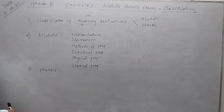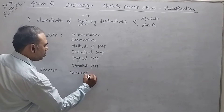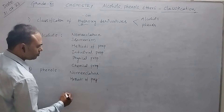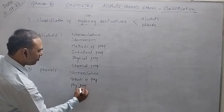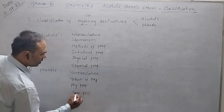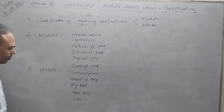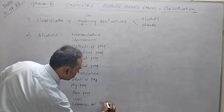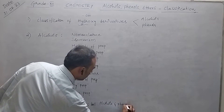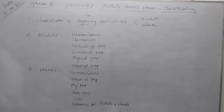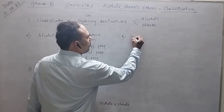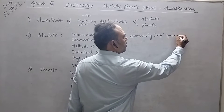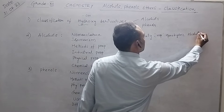Last, we need to study the chemical properties of alcohols. Coming to the third concept, we have to study about phenols: nomenclature of phenols, methods of preparation, physical and chemical properties, uses, and finally the differences between alcohols and phenols. The fourth concept covers commercially important monohydric alcohols and phenols.